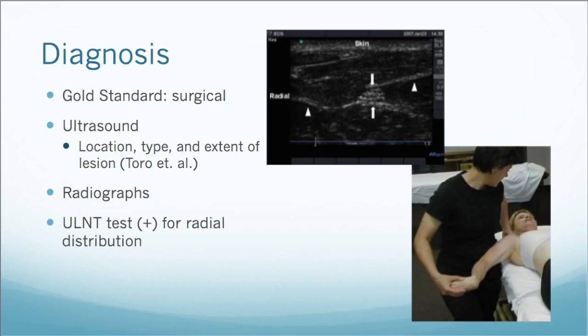As far as diagnosing this condition, the gold standard is exploratory surgery. Radiographs can also be used to detect or rule out fractures, tumors, or healing calluses that may be causing compression of the nerve. Recent studies have found that ultrasound can also be used to find the location, type, and extent of the lesion, which is a lot more cost-efficient than radiographs. Most patients will also have an adverse neural tension test positive in the radial distribution if they have radial nerve entrapment.